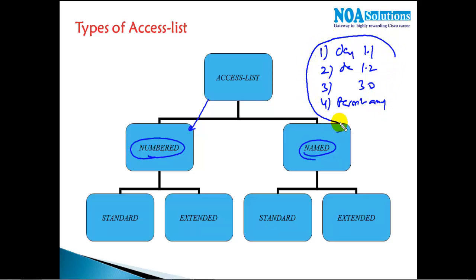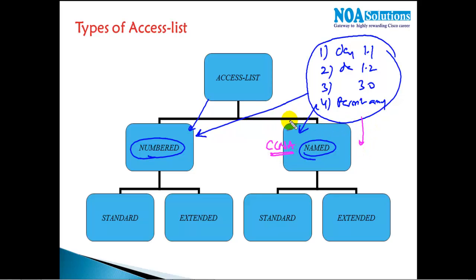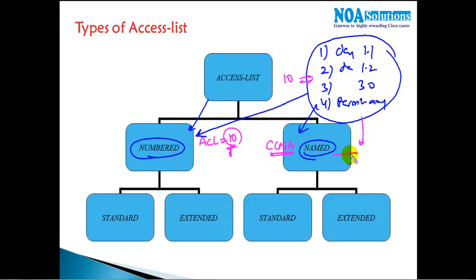You can give the ACL a name like 'CCNA' to identify it on the router, or you can use a number like ACL 10. If you give a number for identification of these rules, it's referred to as a numbered ACL. If you give a name, it's called a named ACL. That's the basic difference.